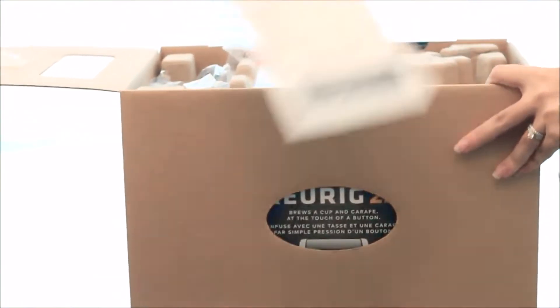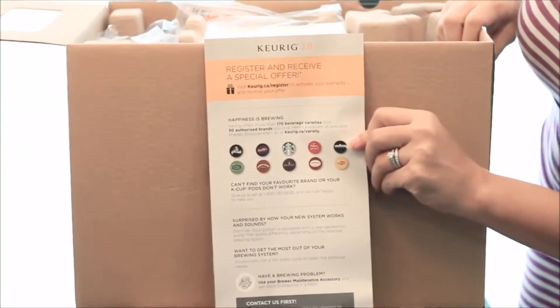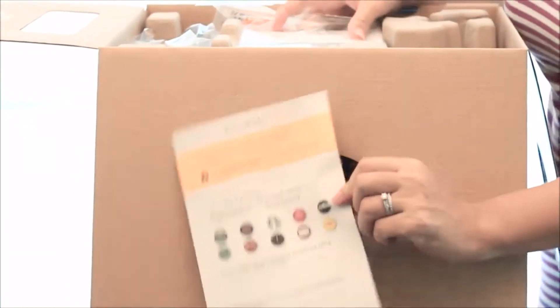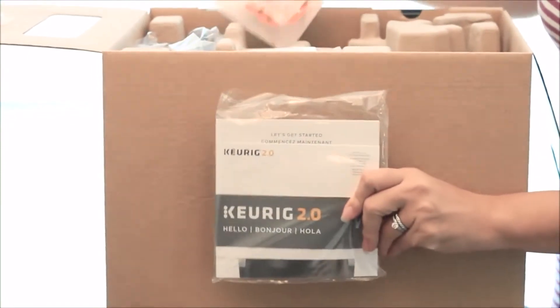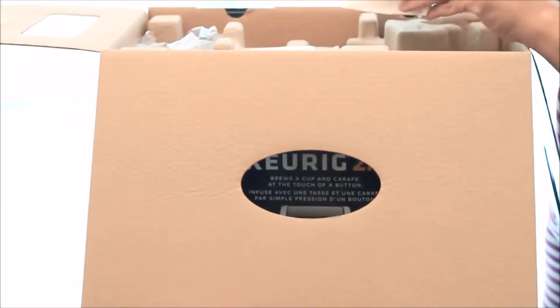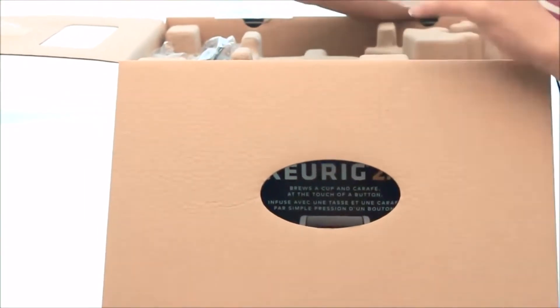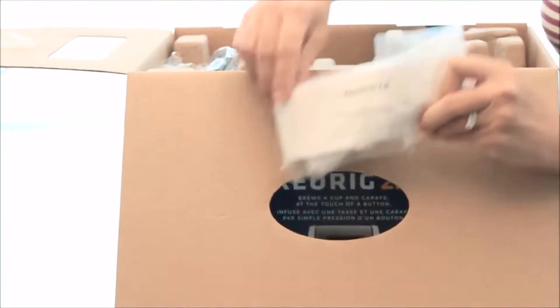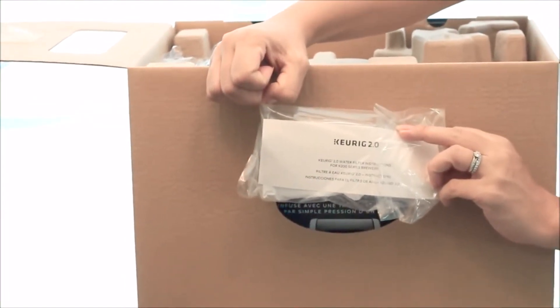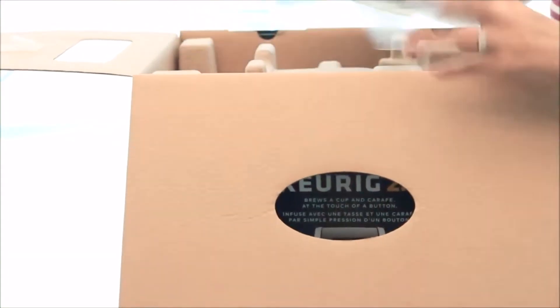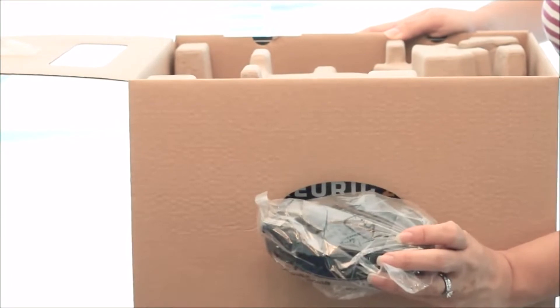So inside there's a little thing from Keurig that says for you to register the brewer and you receive a special offer. There's a manual, there's a brewer maintenance accessory, there's a water filter which is nice because the old Keurig model didn't come with a water filter, and then the plastic drip tray which is a little bit different because the other one is made of steel.